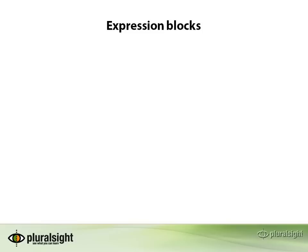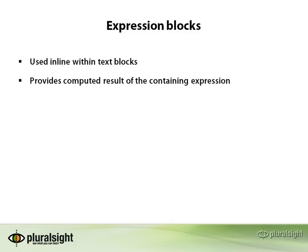The first building block we'll talk about is the expression block. Expression blocks are used within text blocks to provide the value of a computed expression. This can be a variable, a calculation like 2 plus 2, or a method call as long as it has a return type. Expression blocks use the same angle bracket hash syntax as directives do, but use an equal sign to denote that it's an expression block.